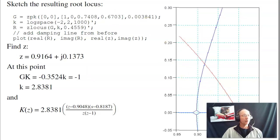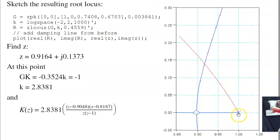If I sketch the root locus for this system, I now have a pole at plus one, going left to the pole at 0.7408. These come together, split apart, and where it crosses the damping line is right here. 0.9164 plus j.1373. At that point, g times k should be minus one. Analyze it. g times k is minus 0.35. The minus sign is good. The gain is wrong. So k should be 2.8. So here's k of z.